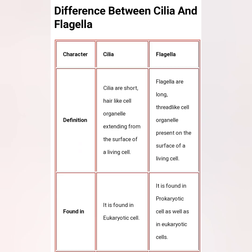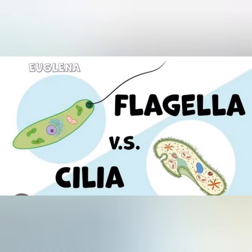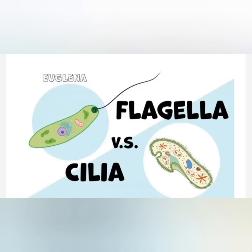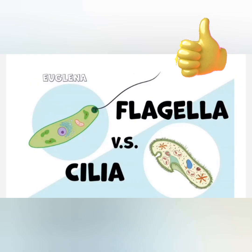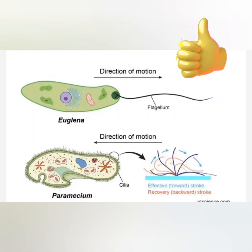What is motile? It is otherwise called moving cilia. It is mainly present in the middle ear, lungs, and respiratory region. It also helps in movement of the sperm.